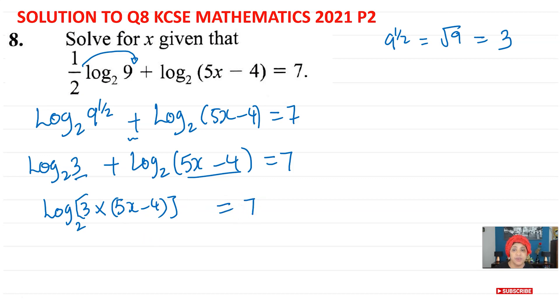What can we do now? We're going to raise this base to the power of 7, and that's going to be equal to 3 and then multiply by all this 5x minus 4. So I've just removed the log.